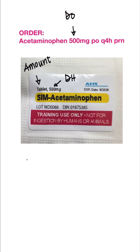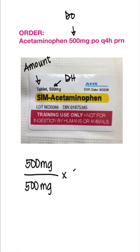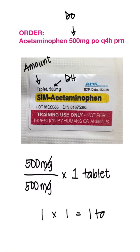So we will write this as 500 milligrams divided by 500 milligrams times one tablet. The milligrams cancel out. 500 divided by 500 is 1, times 1, equals 1 tablet.